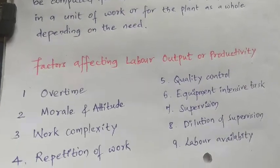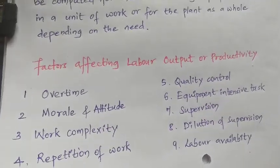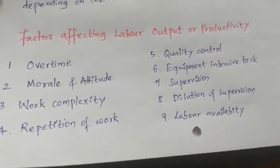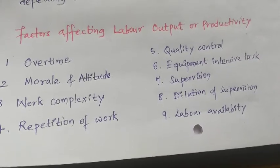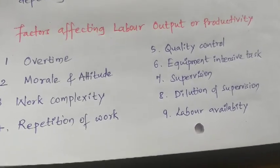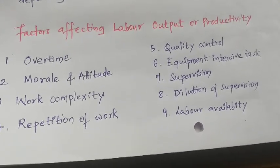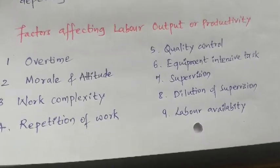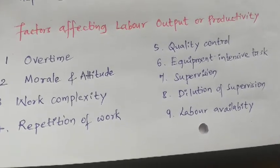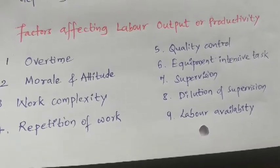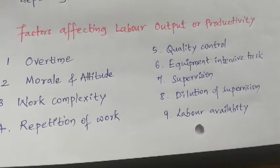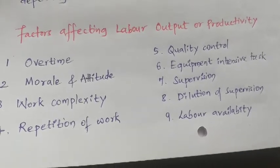Third is work complexity. Simple, familiar work is easier to execute than unknown or unfamiliar complex work. Extra effort needed for unfamiliar work, especially in the initial stages, may range from 10 to 100% of normal expected productivity not being achieved. Next is repetition of work. While the first-time execution is obviously unfamiliar, if the same work is repeated again and again, the skill of the labor increases, giving improved productivity.